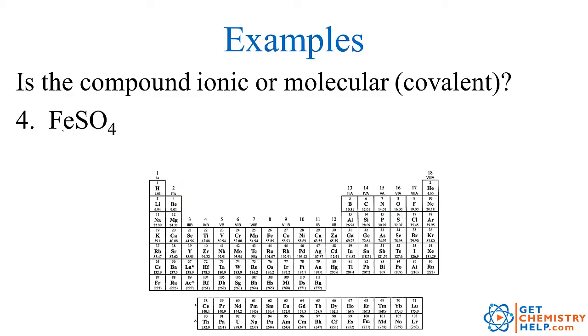How about iron, sulfur, and oxygen together in a compound? Well, here's iron. Here's sulfur. And here's oxygen. So iron is a metal, so therefore it must be an ionic compound.